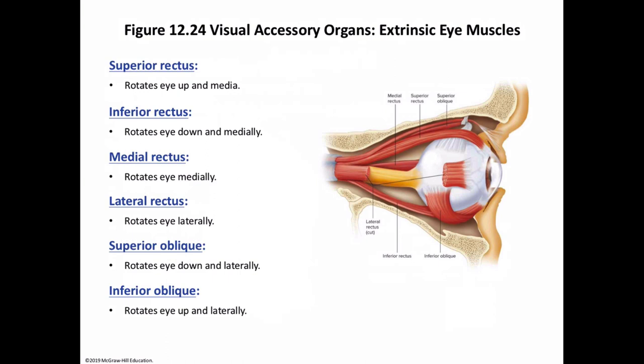Congenital weakness of the external eye muscles may cause strabismus, in which the affected eye rotates either medially or laterally — you may have heard someone referred to as cross-eyed. To compensate, the eyes may alternate in focusing on objects, or only the controllable eye is used. The brain begins to disregard input from that deviant eye, which, unless treated early, can then become functionally blind.